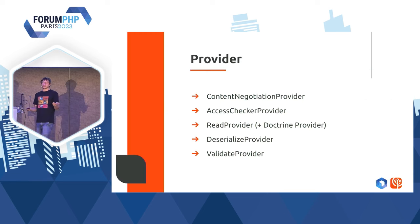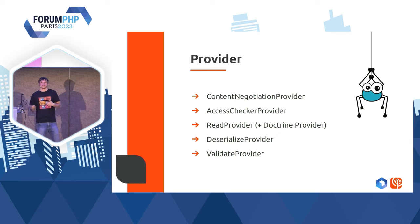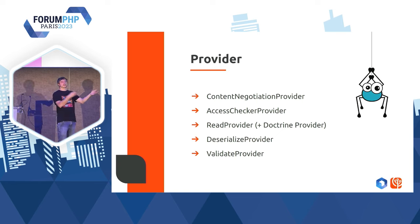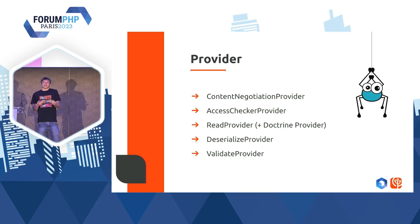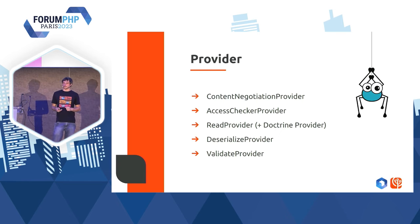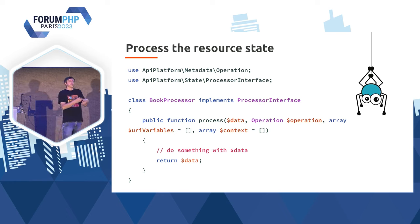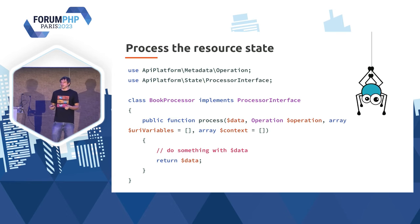Ces providers, maintenant dans API Platform 3.2, vous en avez plusieurs. Il y a le Content Negotiation Provider qui va gérer la négociation de contenu — est-ce qu'on veut du HAL, du JSON API, du JSON-LD. Access Checker pour la sécurité. Read Provider va récupérer la donnée dans Doctrine ou un autre système de base de données. Deserialize, si vous avez fait un POST, va transformer la requête JSON en objet PHP. Validate Provider pour la validation. On a la même chose au niveau des processeurs — c'est là où on va récupérer votre objet et en faire quelque chose : l'envoyer par mail, le mettre dans une base de données, et ainsi de suite.